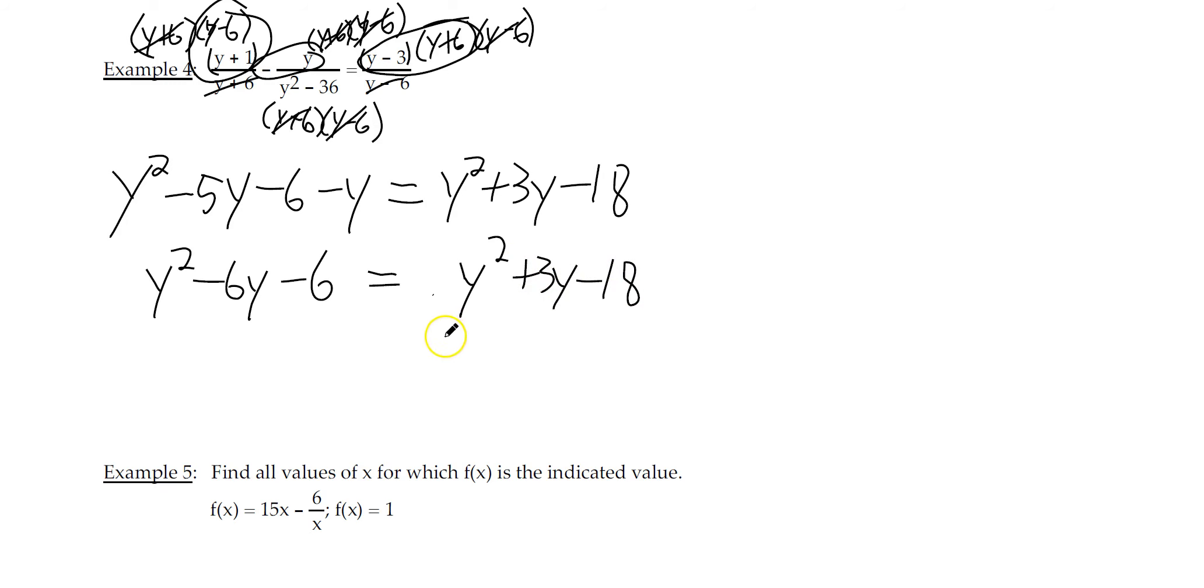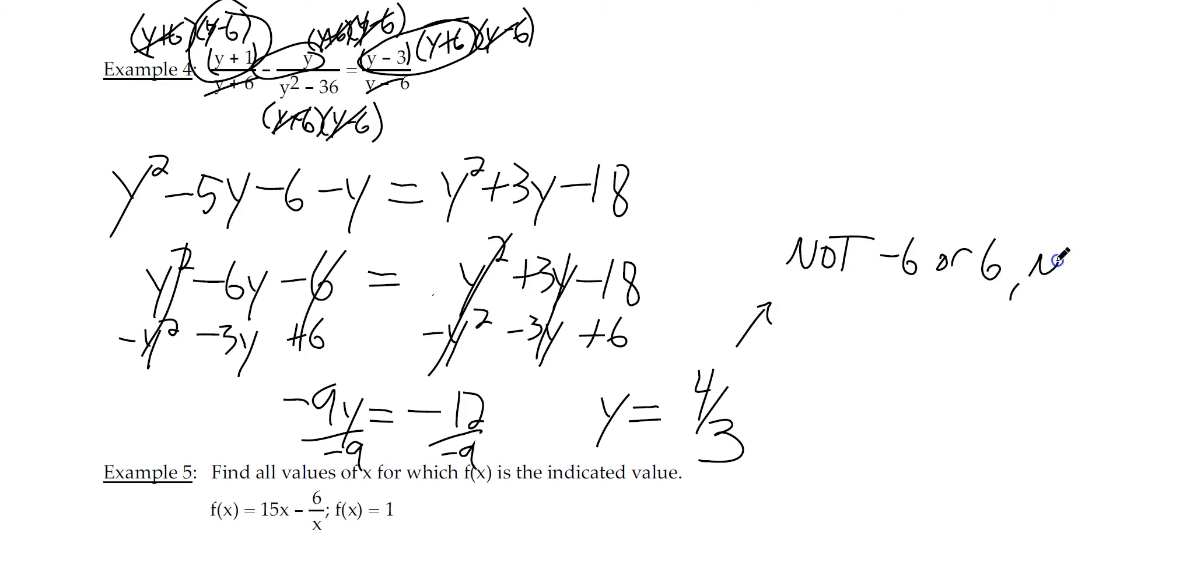Now, when we move everything to the left, we notice they all reduce. The y squareds are gone. This is not a quadratic equation. Now it's just linear. So for the linear equations, we want to move all the variables to the left and all the numbers to the right, leaving us negative 9y equals negative 12. Divide by negative 9, and we have y equals 4 thirds. Now for extraneous, negative 6 is a problem, so is positive 6. So not extraneous.